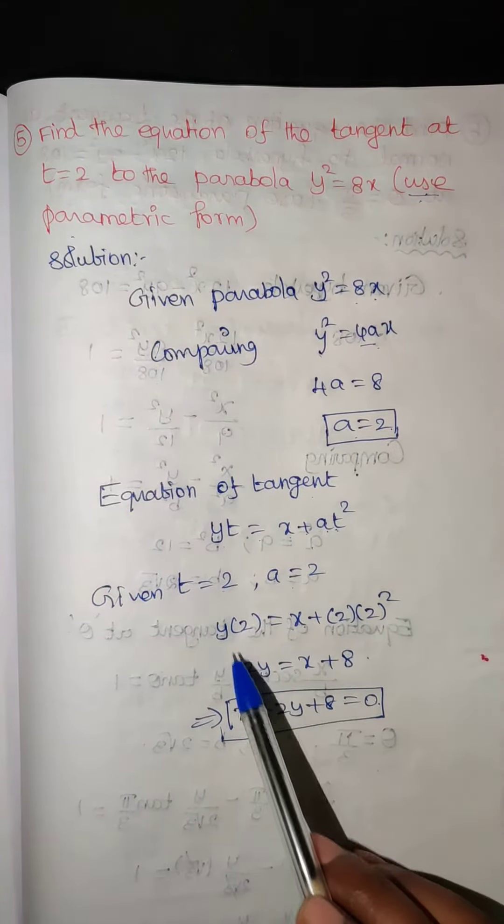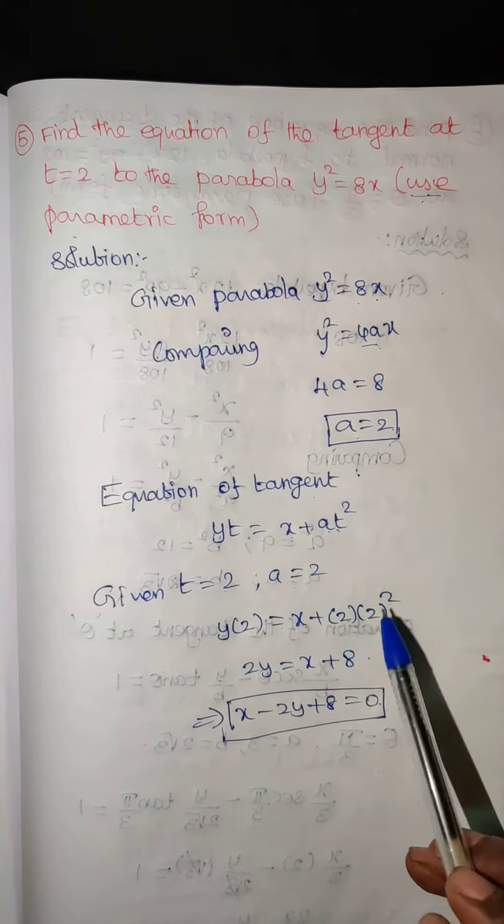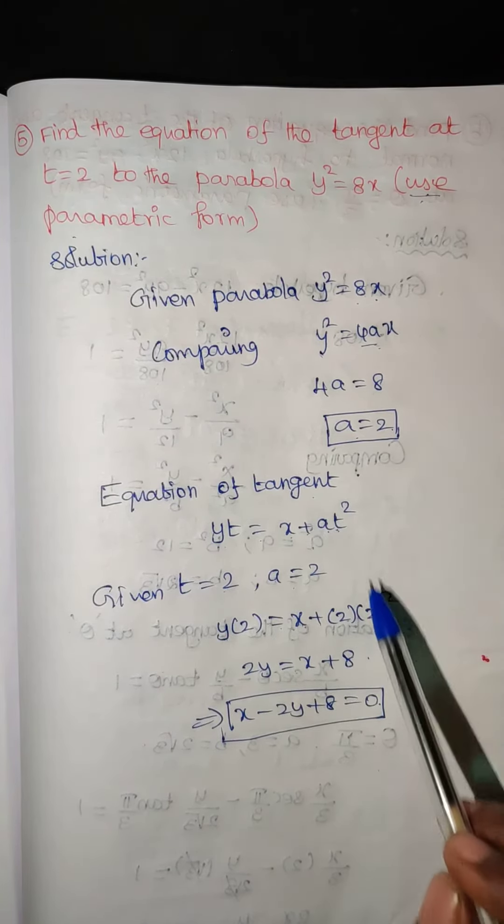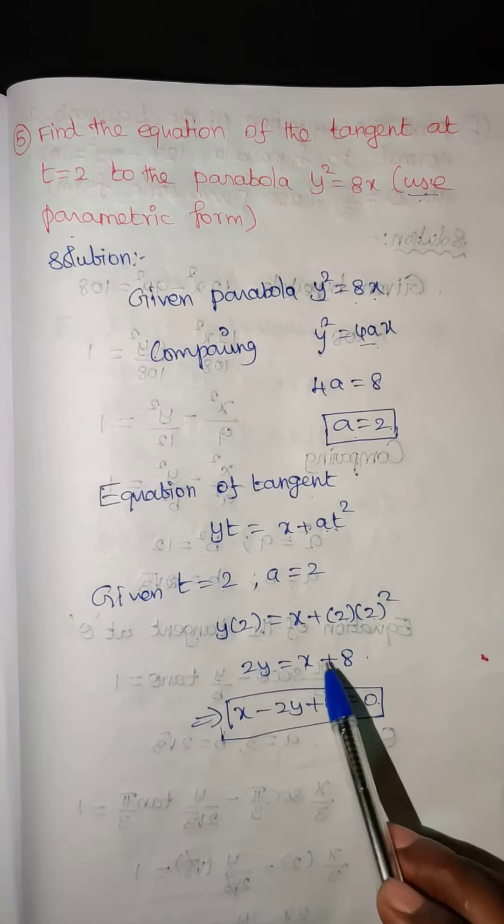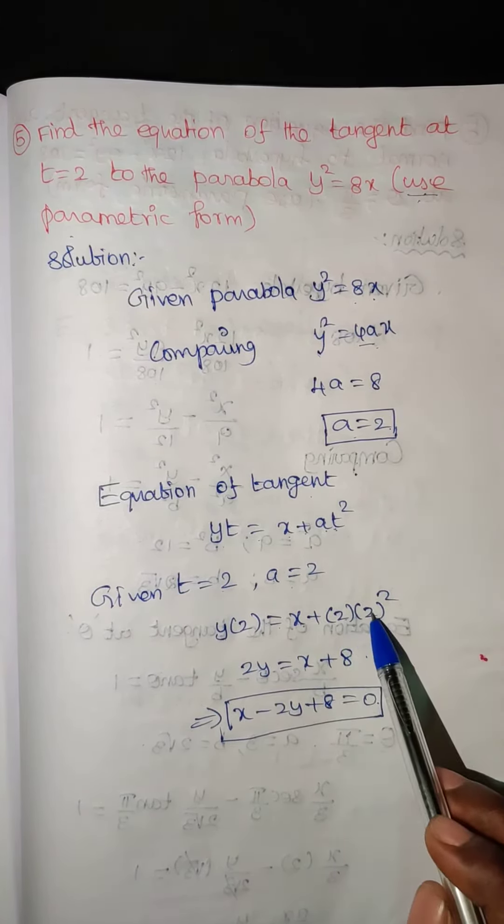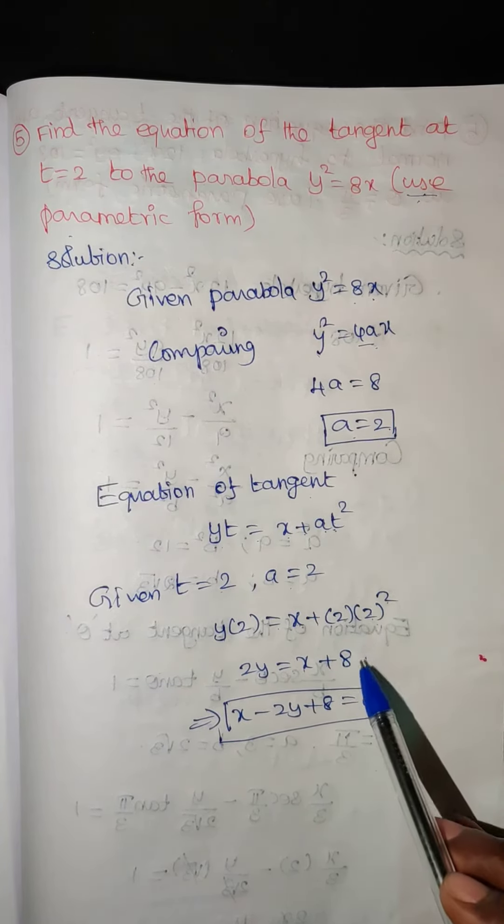So now y into t value 2 equals x plus a value 2 into t squared or 2 squared. So 2y equals x plus 2 into 2 to the power 2, that is 2 cubed or 2 into 4, which is 8.